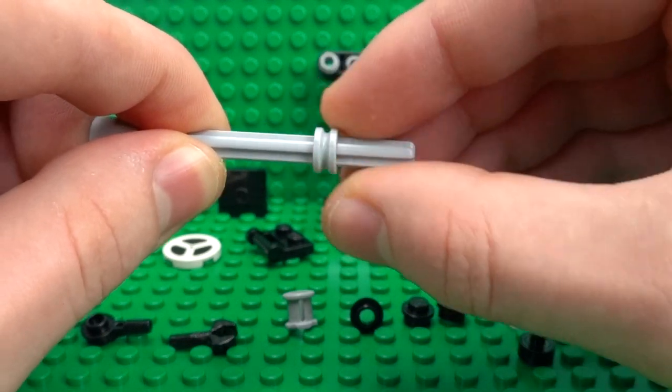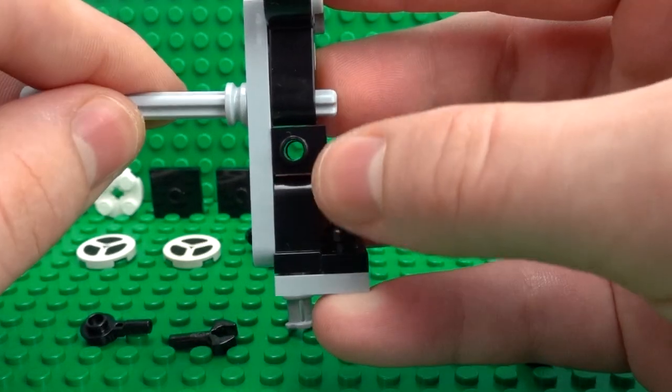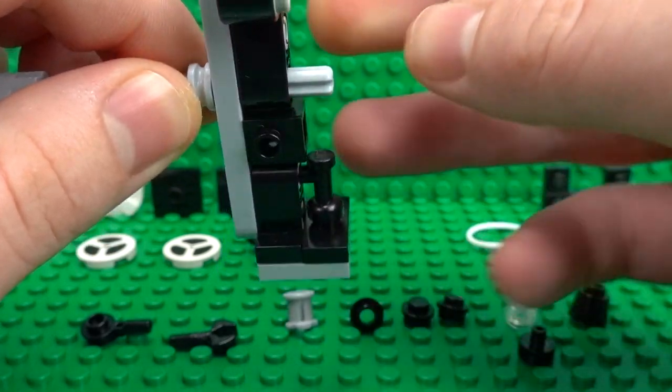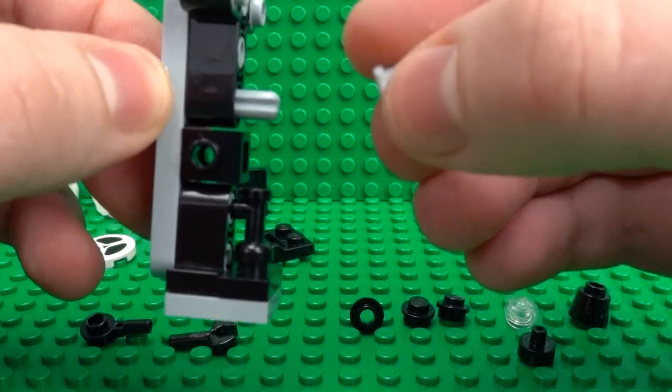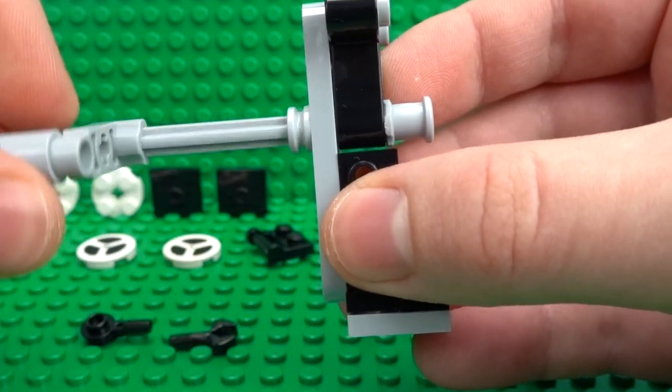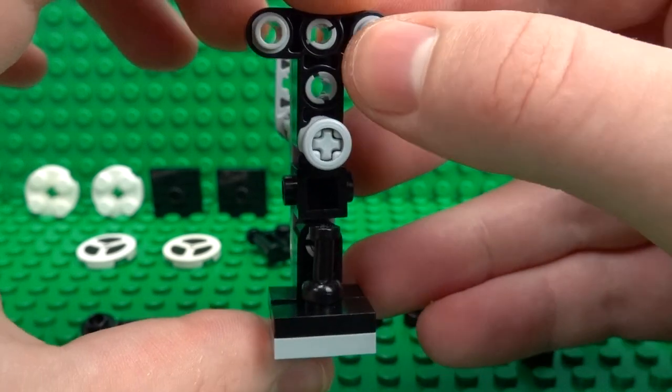Then take this half Technic bush and slide it through to just about there. So then you can take this and push that all the way through until you have about a one stud space, or however much space you need to attach this full-sized Technic bush. And that is where the rubber bands will rest on when we attach those.